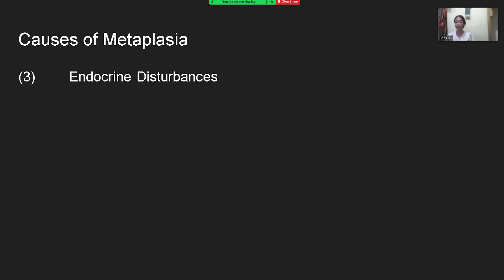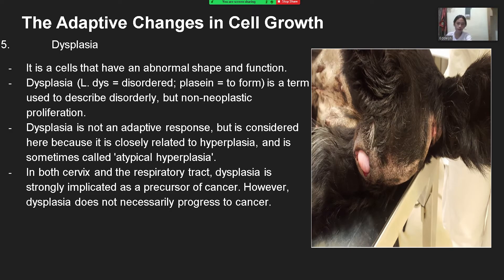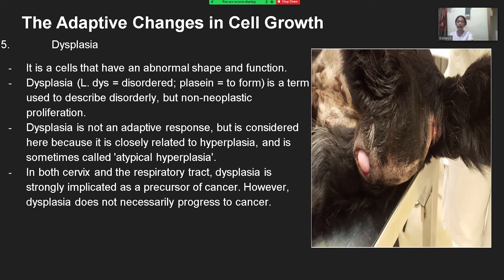The last topic is dysplasia. Dysplasia refers to cells that have an abnormal shape and function. It comes from the word 'dys' meaning disordered, and 'plasia' meaning to form. It is a term used to describe disorderly but non-neoplastic proliferation. Dysplasia is not an adaptive response but is considered here because it is closely related to hyperplasia, and is sometimes called atypical hyperplasia.